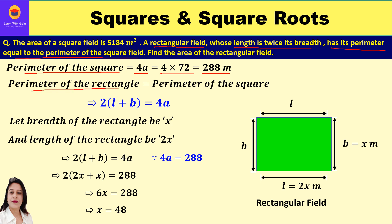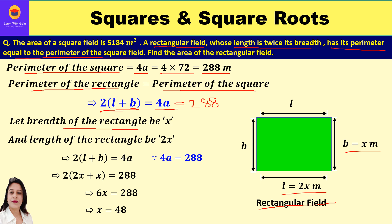The perimeter of the rectangle equals the perimeter of the square. So 2 × (length + breadth) = 4a = 288 meters. For the rectangular field, let the breadth be x meters and the length be 2x, that is twice the breadth. So the perimeter of the rectangle is 2 × (2x + x) = 288.